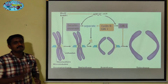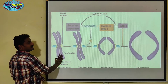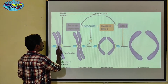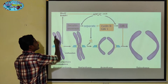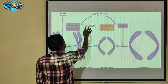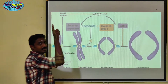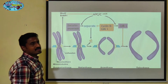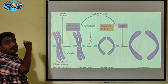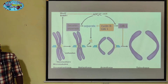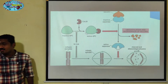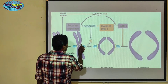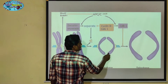Looking at this diagram: in the metaphase stage, this is the chromosome. The cohesin proteins are attached at the centromere, providing stability. This is the Separase-Securin complex. It will be broken down by APC together with CDC20.